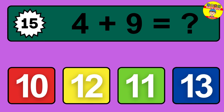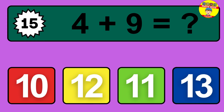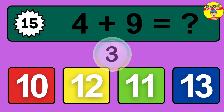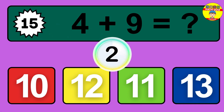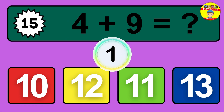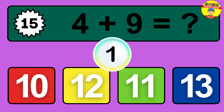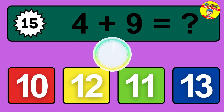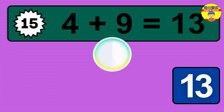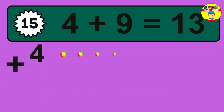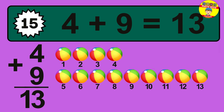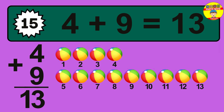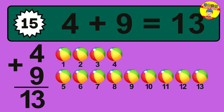Question 15. 4 plus 9 equals what? So the answer is 4 plus 9 is 13.